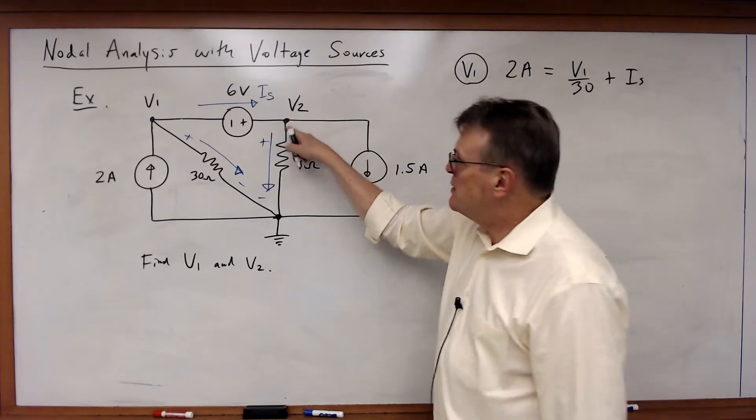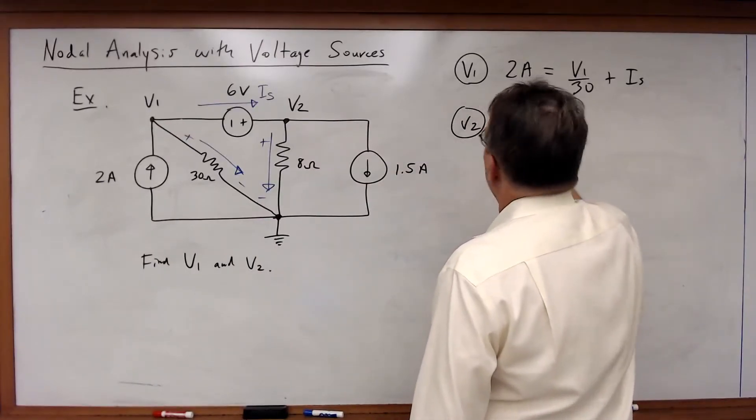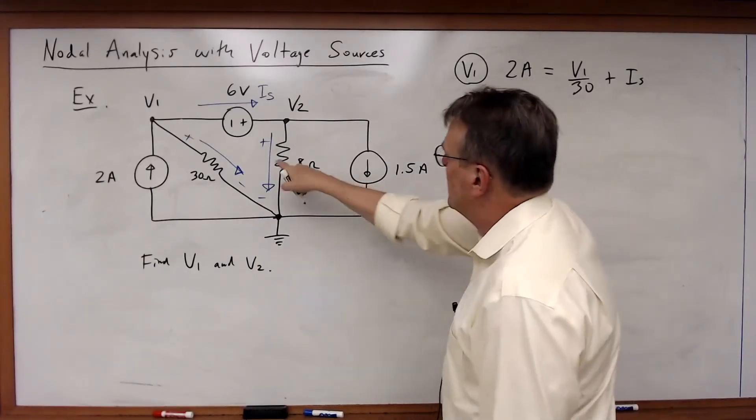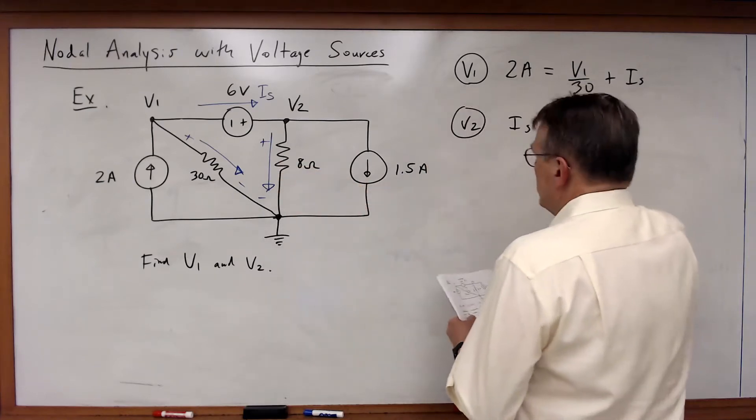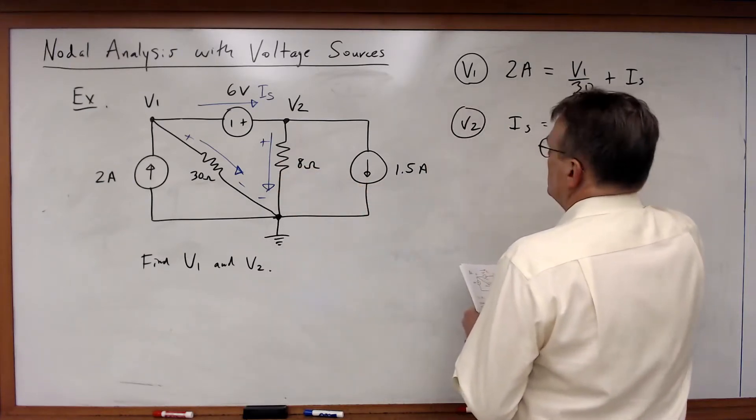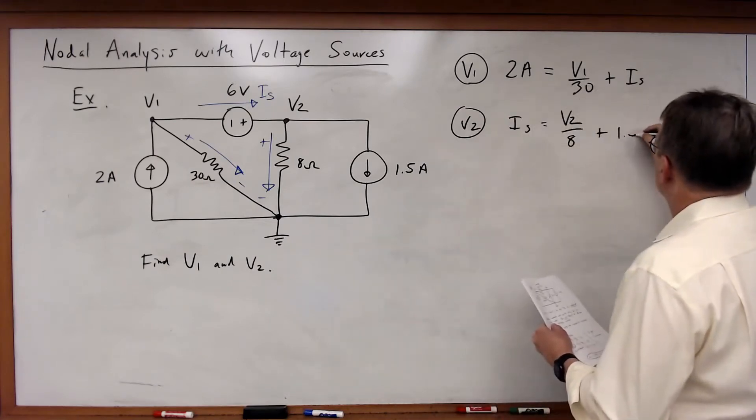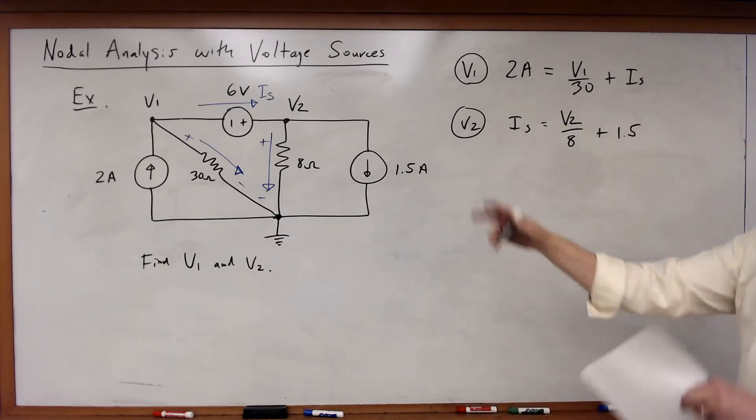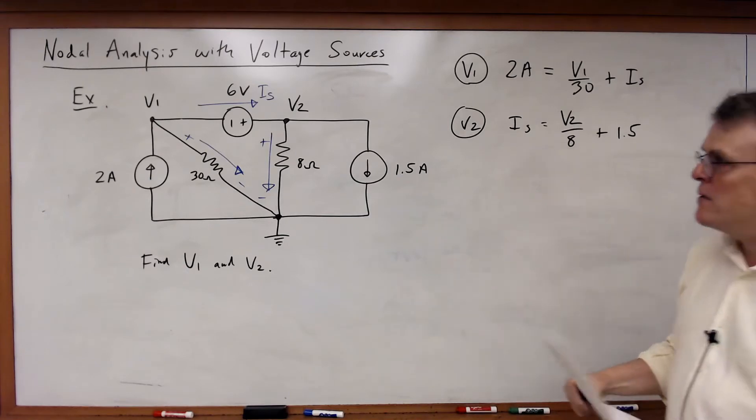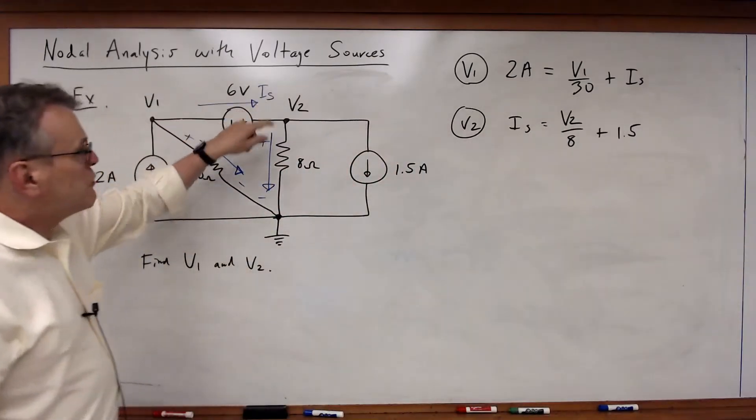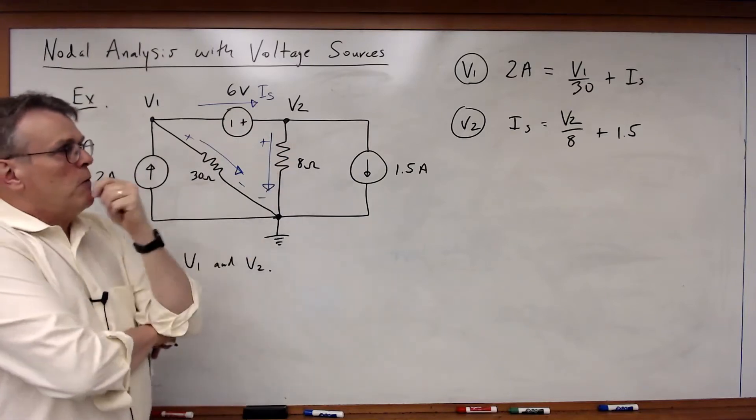If I forget I sub s I'm never going to be able to solve this problem. For V2, I sub s flowing in must be equal to V2 over 8 plus 1.5. Current going in equal current going out.